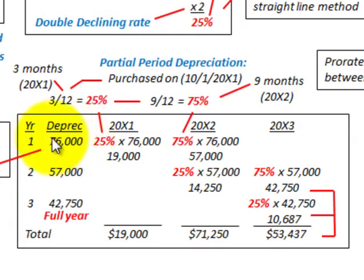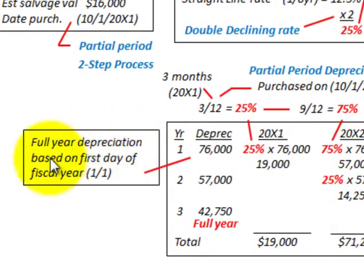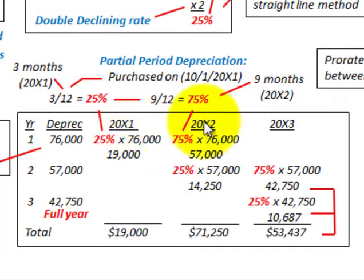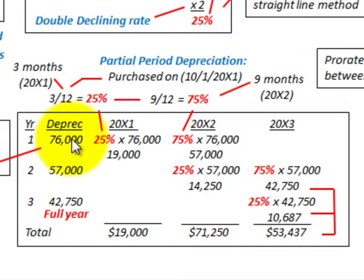The depreciation expense column shows the full-year depreciation based on the first day of the fiscal year. We calculated year 1 depreciation to be $76,000. For 20x1, we take 25% times $76,000 and come up with $19,000 — that's for October through December. For 20x2, we look at January through October, which is 9 months or 75%. So 75% times $76,000 gives us $57,000.